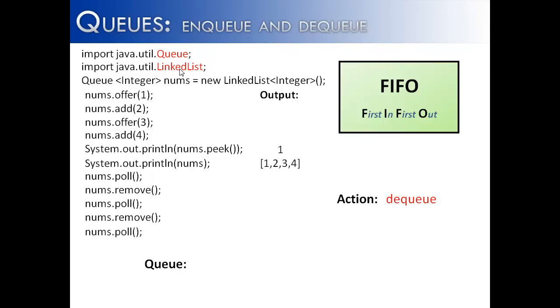Now, if I was to call poll right now, it would return null. But if I was to try to call remove, it would throw an error because there is nothing left inside of the queue. So you can see the slight difference there.